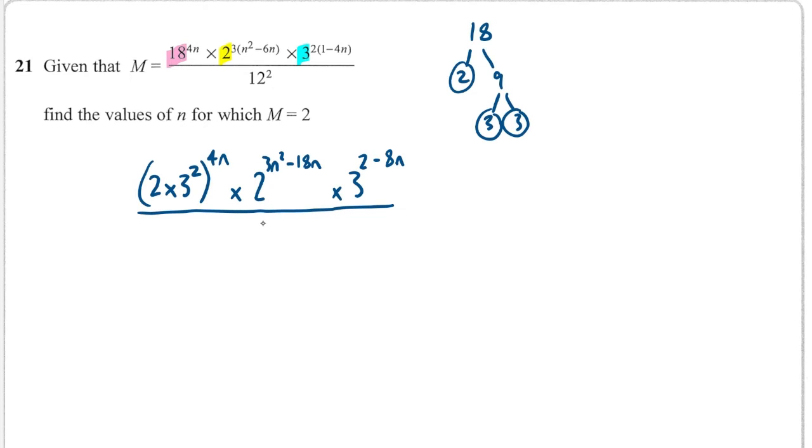And on the bottom, I have 12 squared and 12 as prime factors is 2 and 6 and 2 and 3. So I could write that as 2 squared times 3, all squared. And all of this is equal to m, which we're told is 2.